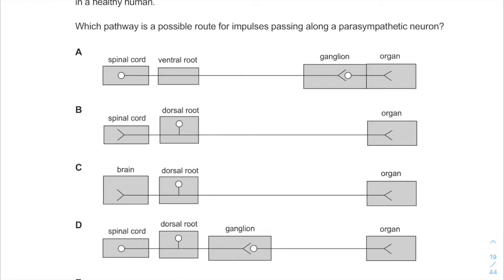We should know that the proximity of the ganglion of the parasympathetic neuron is close to the affected organ, which gives us only A as our answer.